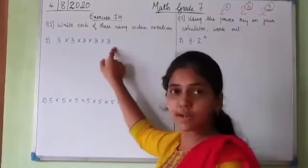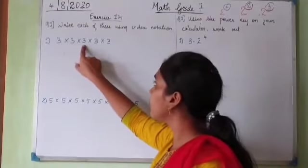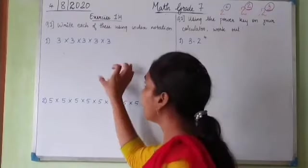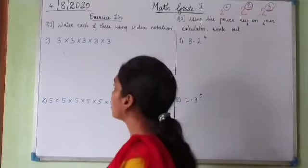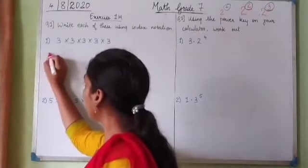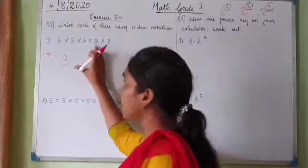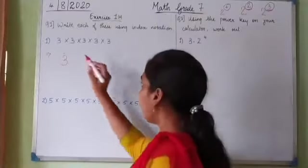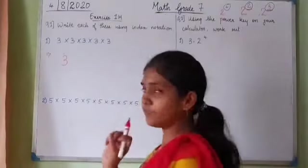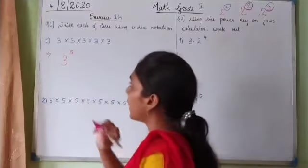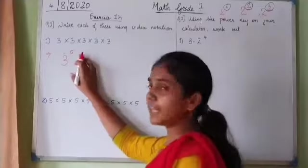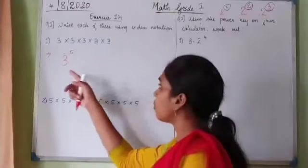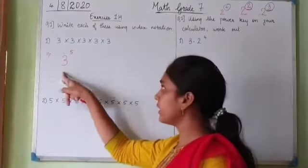The number 3 is getting multiplied to itself how many times? Let us count: 1, 2, 3, 4, 5. The number 3 is multiplied to itself 5 times. We write the base 3, and the count 5 is written as the index above. This is 3 raised to 5 — the index notation. 5 is called the index and 3 is called the base.